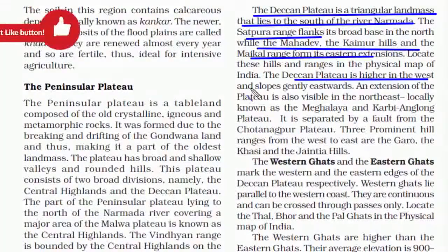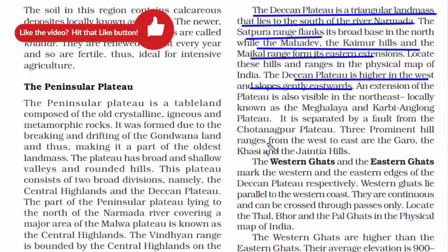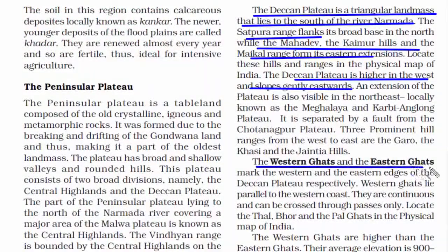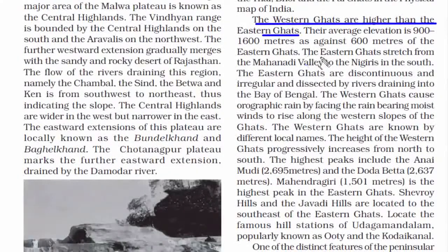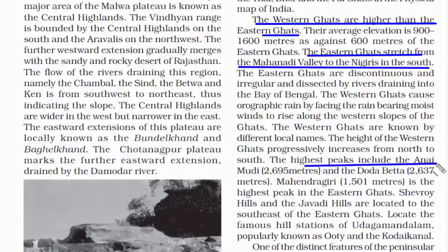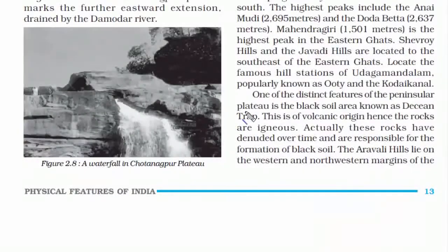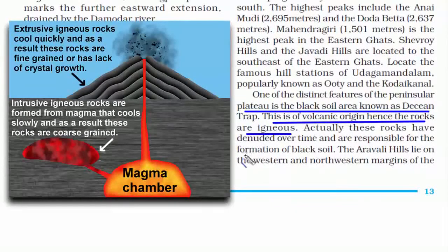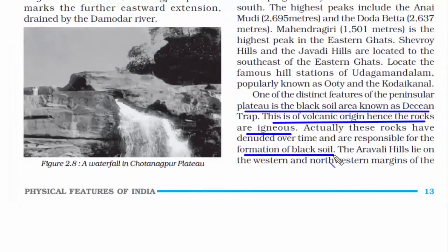The Deccan Plateau is higher on the western side and slopes gently towards the east, which is why the majority of rivers flow into the Bay of Bengal. The Western Ghats and Eastern Ghats form the west and east edges of the Deccan Plateau respectively. The Western Ghats are higher in elevation than the Eastern Ghats. The Eastern Ghats stretch from the Mahanadi valley in Odisha to the Nilgiris in the south, while the Western Ghats start near the Gujarat-Maharashtra border as the Sahyadri and reach the Nilgiris in Tamil Nadu. The highest peaks are Anaimudi and Doddabetta. The Deccan Plateau is known for its black soil of volcanic origin, with igneous rocks responsible for its formation.